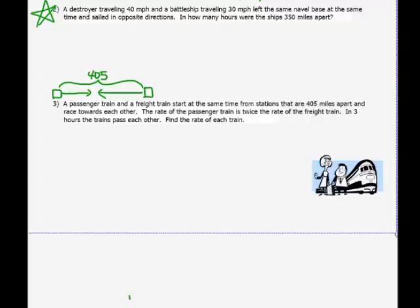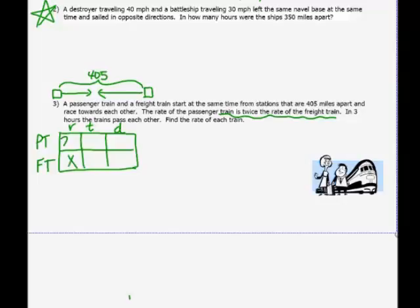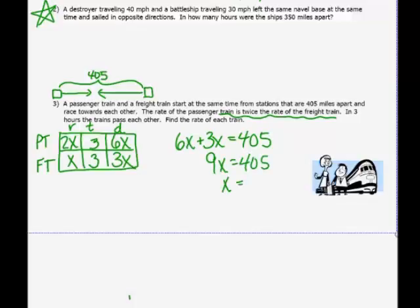My passenger train, my freight train, and I'm going to make my table. The only thing I know is that the passenger train is twice the rate of the freight train. So this freight train is x, the passenger train is 2x. I know that they travel for three hours. So this one has gone 6x, this one has gone 3x miles. And I want that total distance to be 405 miles. 9x equals 405 and x is going to be 45. They want to know, find the rate of each train. So the freight train is 45 miles per hour and the passenger train is twice that, so 90 miles per hour. And there's my answer.